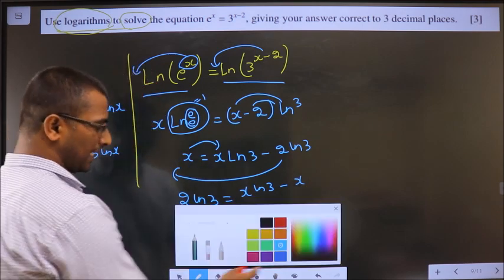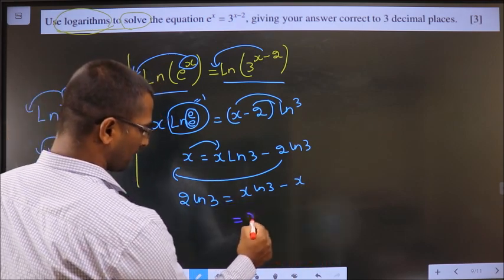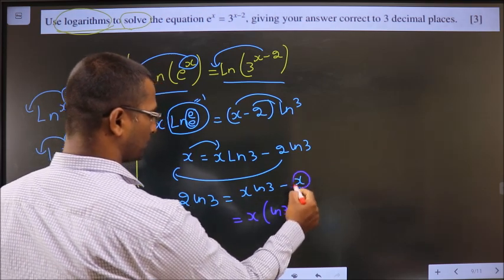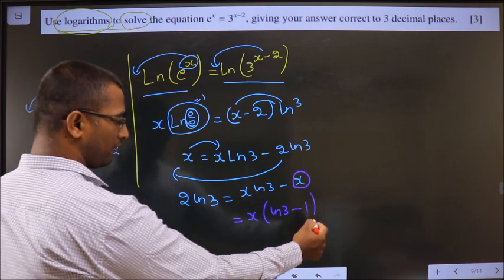Next step, take x common. So if I take x common, here it is ln 3 and this x came out leaving 1.